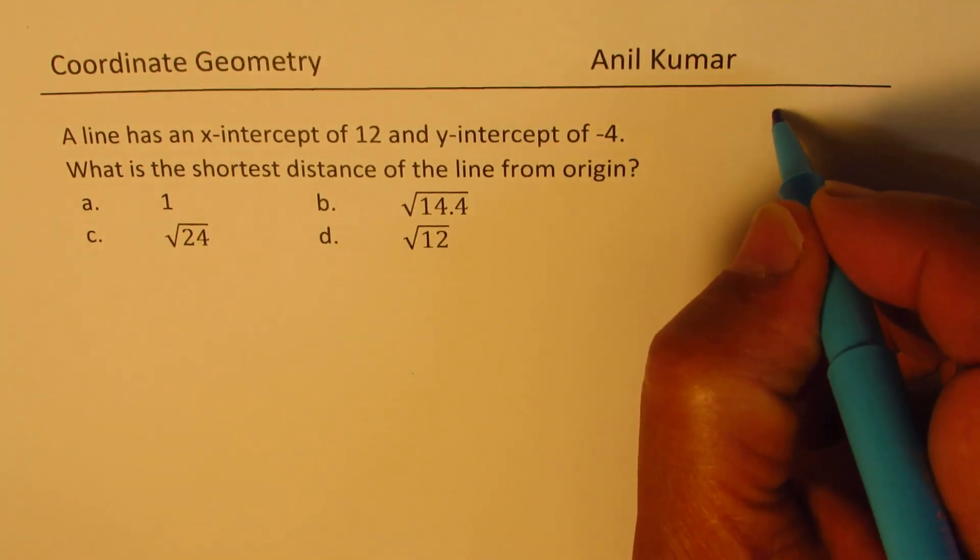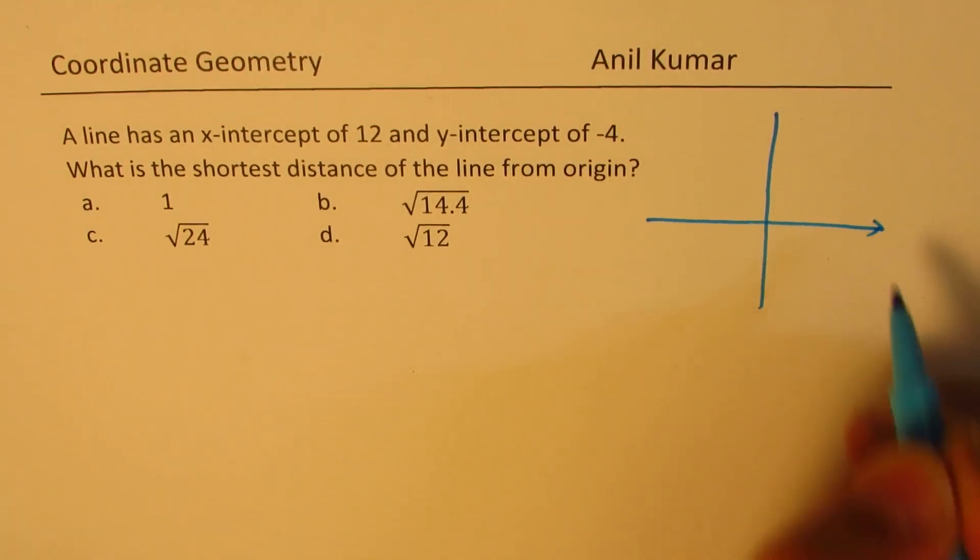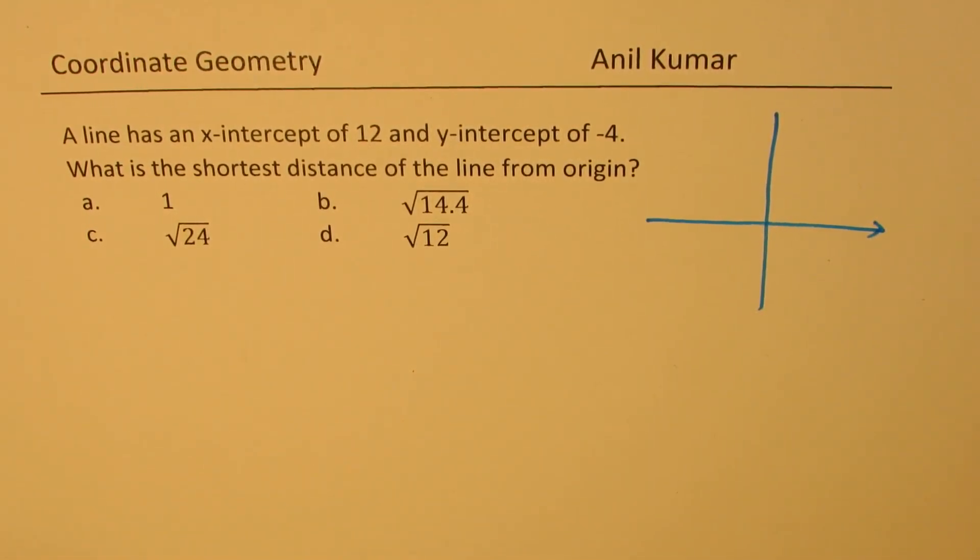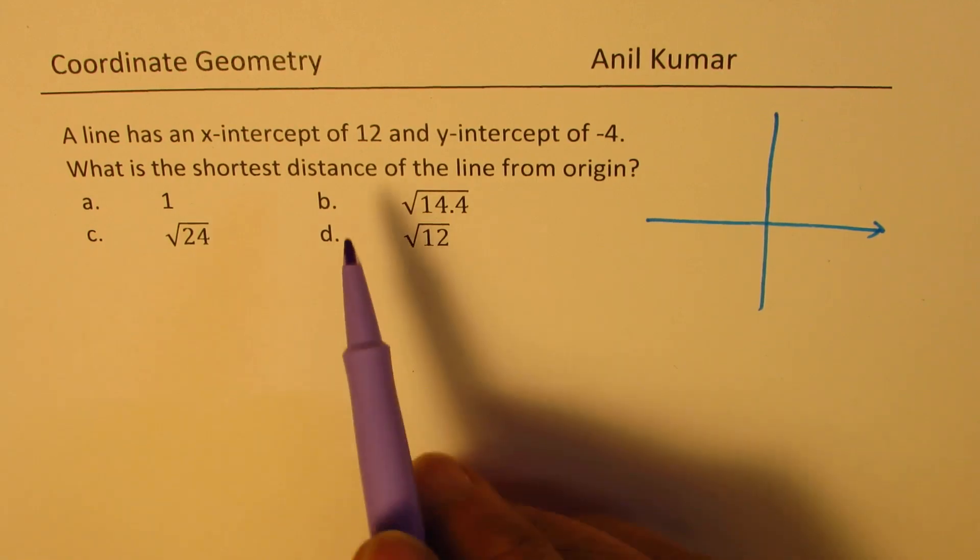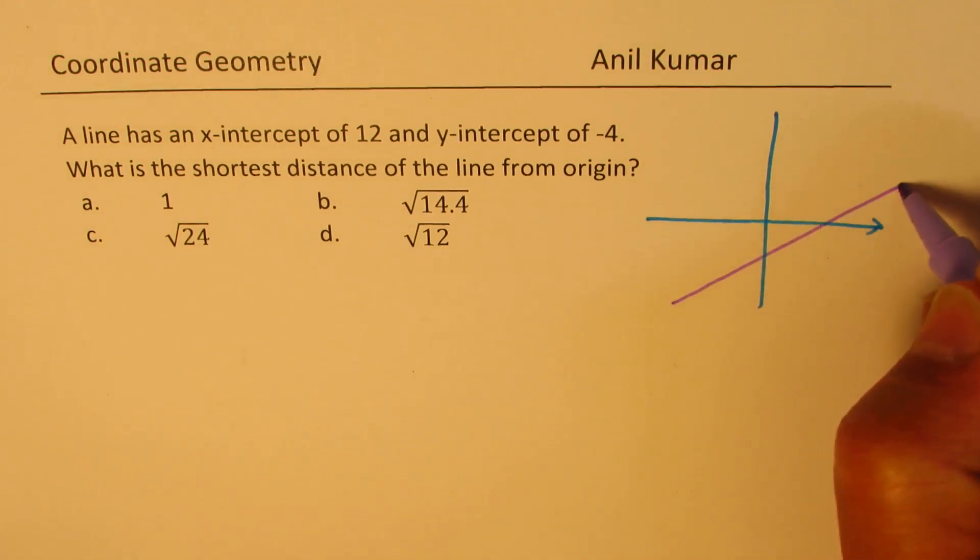So, let's sketch the scenario. That is our coordinate axis. We are given a line whose x-intercept is 12 and y-intercept is minus 4. So, let's say kind of like this.